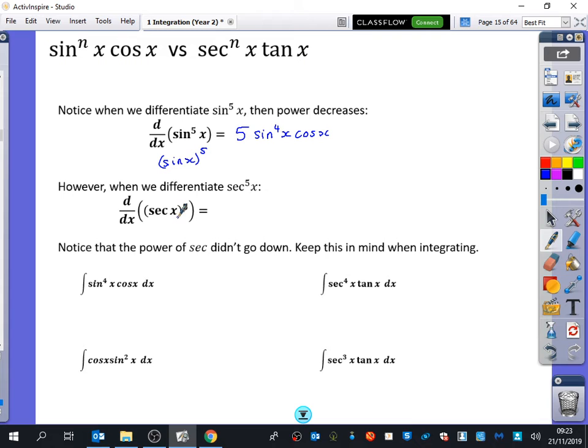But when we do sec x to the power of 5, that would differentiate to 5 sec to the power of 4x. And then what would we multiply by? Sec x tan x. So we actually get 5 sec to the power of 5x tan x. So interestingly there, the power stays the same.